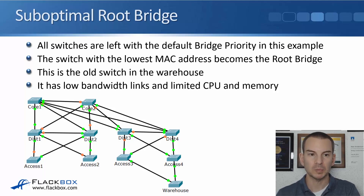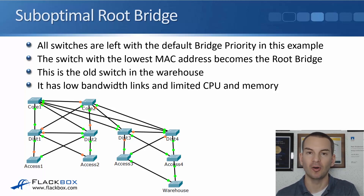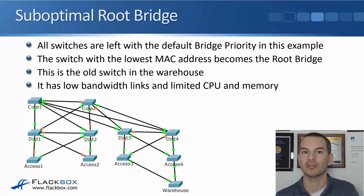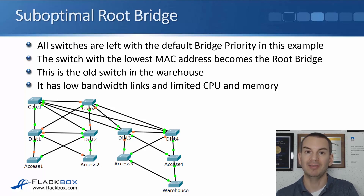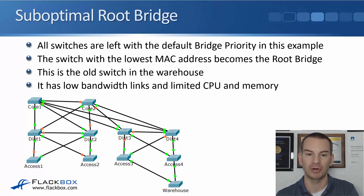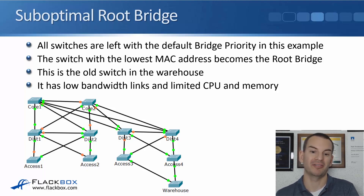In our example here, all switches have been left with the default bridge priority, and you'd be surprised at how often this actually happens in production networks. Because spanning tree works just fine straight out of the box, a lot of network administrators don't touch it at all — they just leave it as is. That can lead to the problem you see here: the switch with the lowest MAC address becomes the root bridge, which happens to be the old switch in the warehouse.